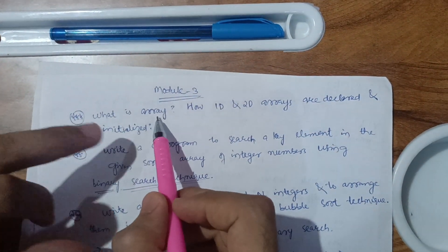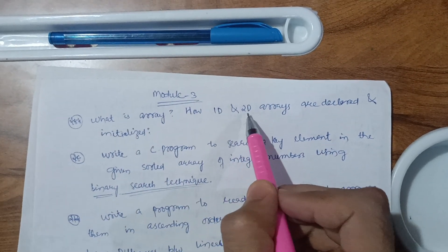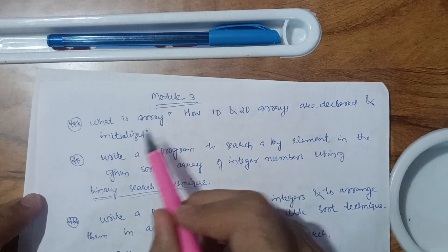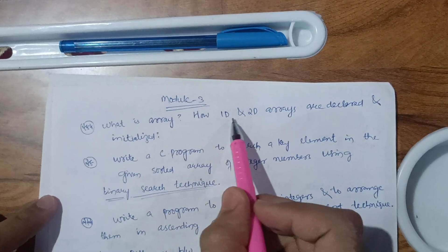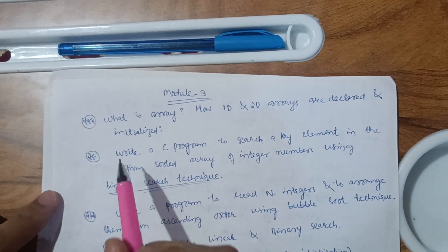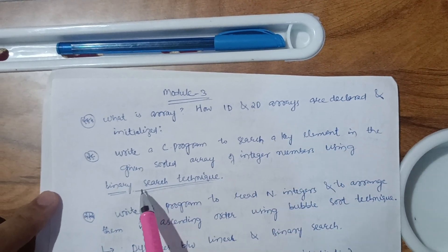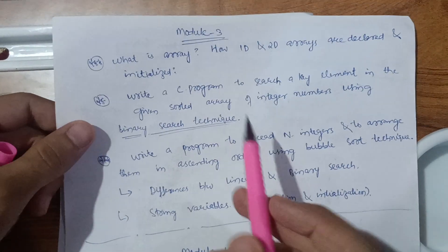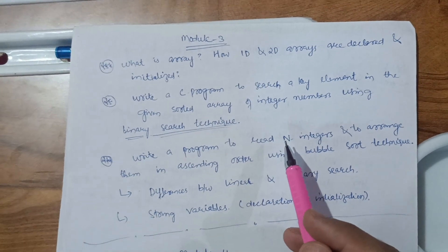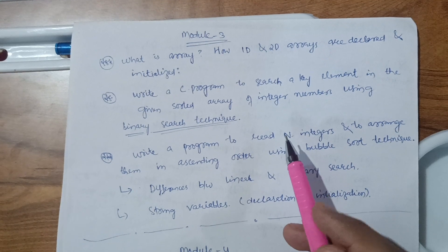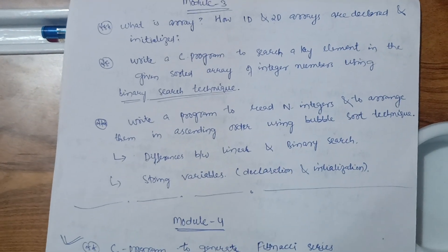In Module 3, the first chapter covers arrays. Focus on what an array is and how one-dimensional and two-dimensional arrays are declared and initialized. You need to focus on the declaration and initialization parts of both 1D and 2D arrays. Then write a C program to search a key element in a given sorted array of integers using the binary search technique. Out of the 14 programs, just cover at least five.